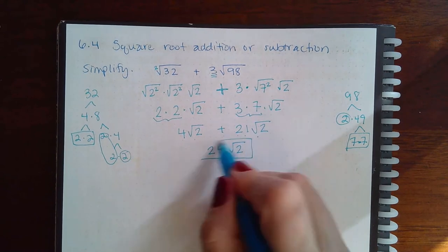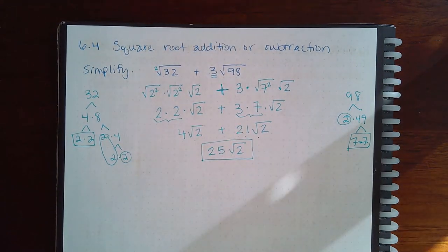And this is the final answer. So you do have to simplify those square roots to make sure that they're actually like terms before you go ahead and add or subtract them.